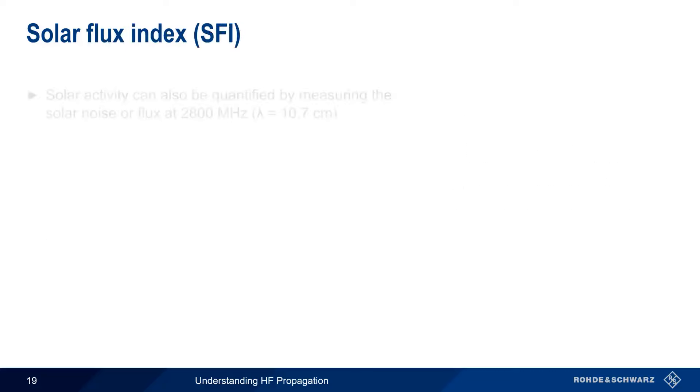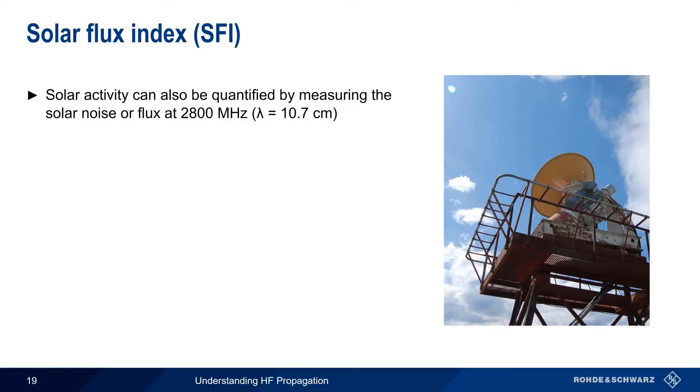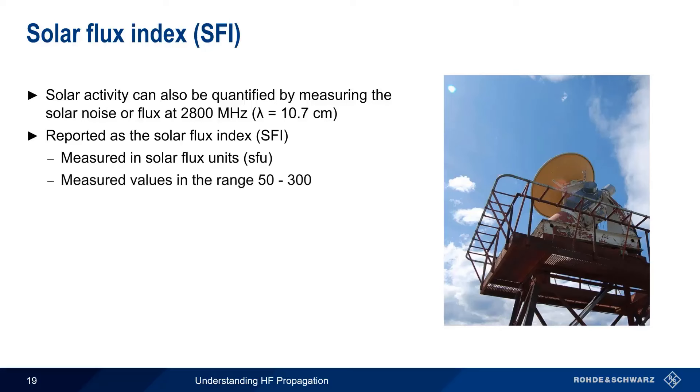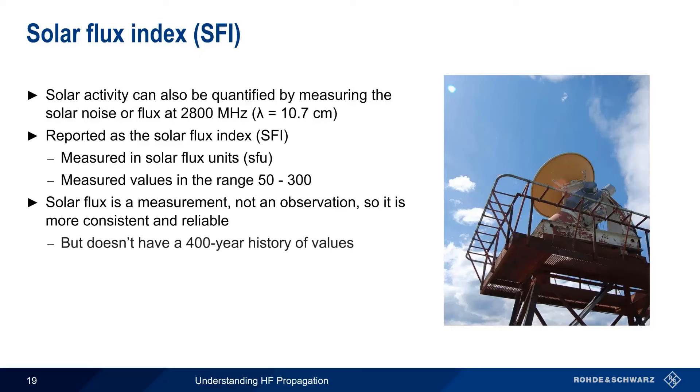We can also quantify solar activity by measuring the level of solar noise, or flux, at a frequency of 2800 MHz. These measurements are reported as the Solar Flux Index, with values given in so-called solar flux units. Measured solar flux values generally fall in the range of about 50 during a solar cycle minimum to about 300 during a solar cycle maximum. Since solar flux is a measurement, not an observation, it tends to be more consistent and reliable than sunspot number, but it also doesn't have the same 400-year history of values.